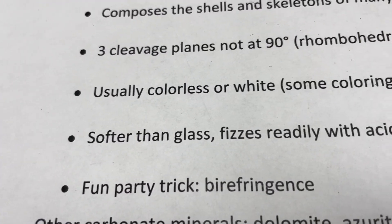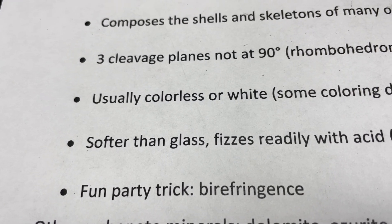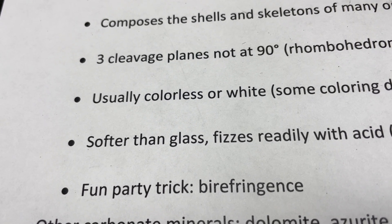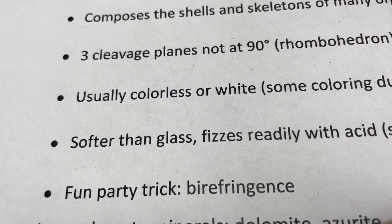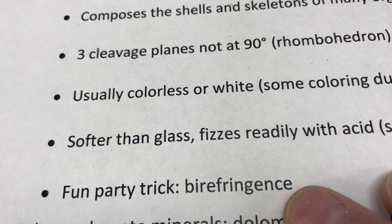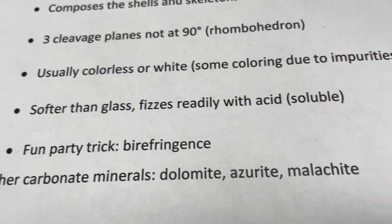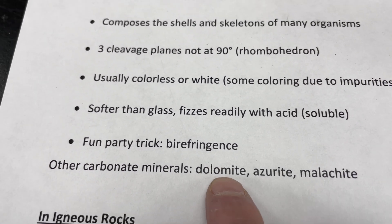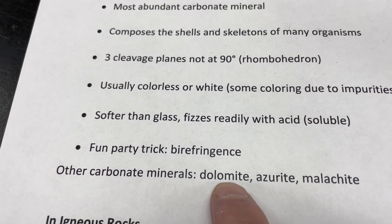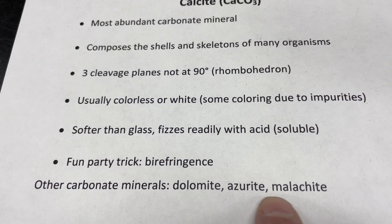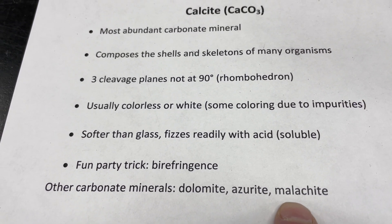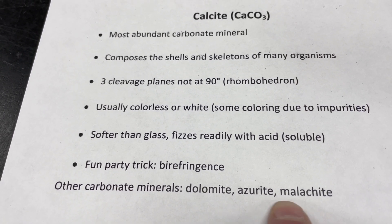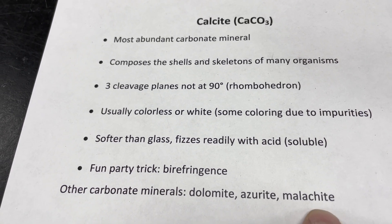We'll also look at a fun party trick called birefringence, which is basically double refraction — if you have a nice pure piece of calcite you can demonstrate it. Then there are a couple of other carbonate minerals worth knowing: dolomite is calcium and magnesium carbonate, and azurite and malachite are copper carbonates. Azurite is a brilliant sky-blue color and malachite is a very attractive green.